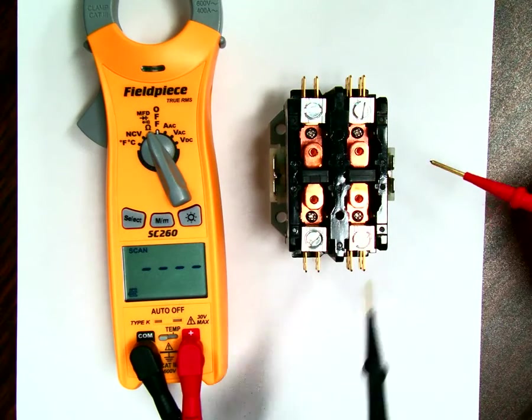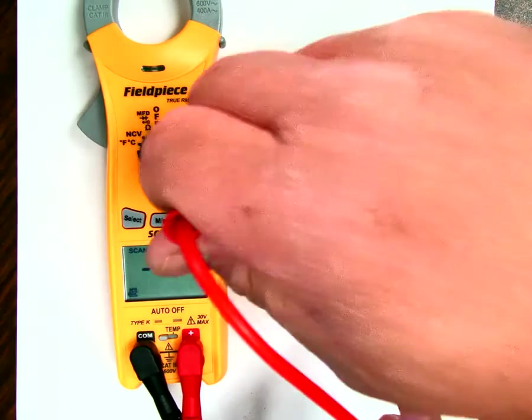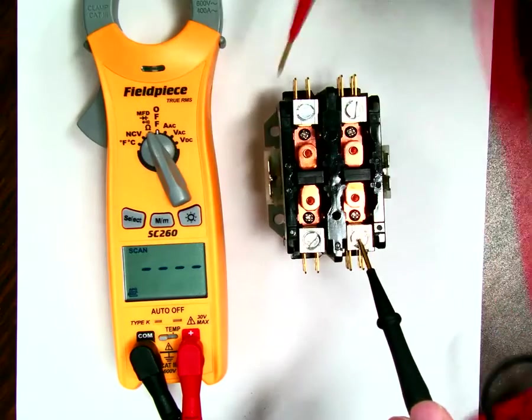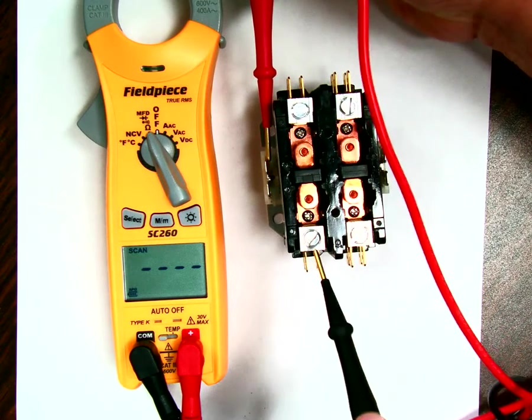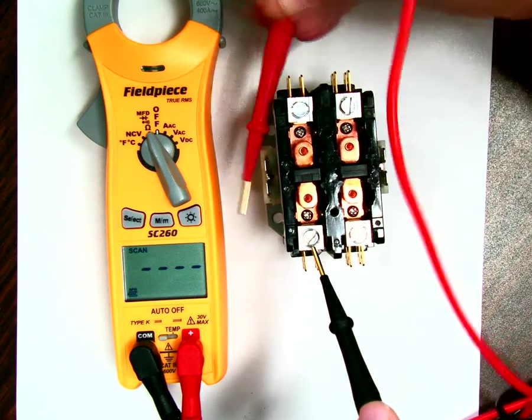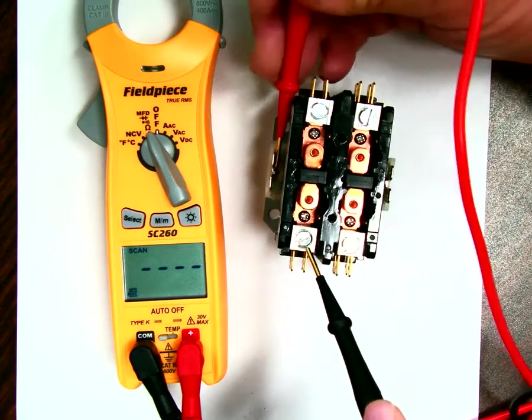Now, from here to this side, there's no continuity. When I go to each one of those points, I'm going to touch this and go to each one, and you're going to see there's no reading. And that's normal.